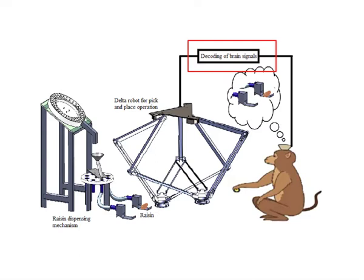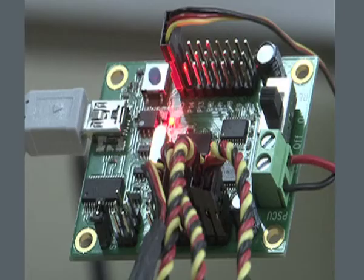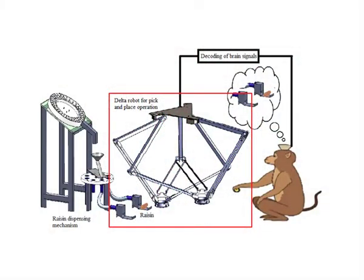A population vector-based decoding algorithm, which has been implemented by us, tells whether the selected signal corresponds to left or right hand movement. This decoded data is then sent to the Delta robot controller, which executes a corresponding left or right motion.